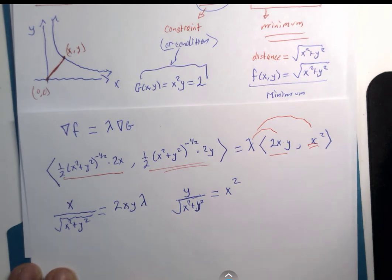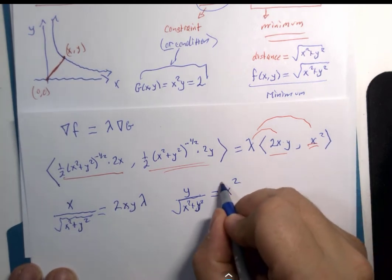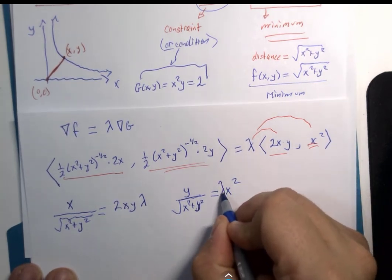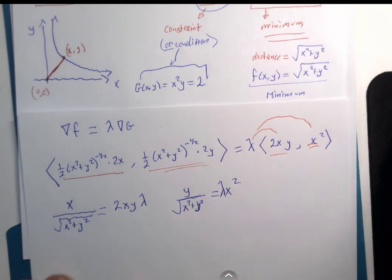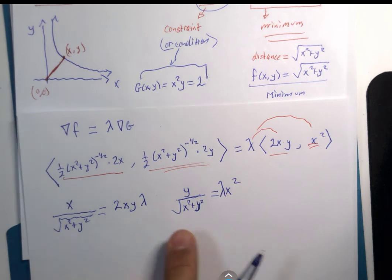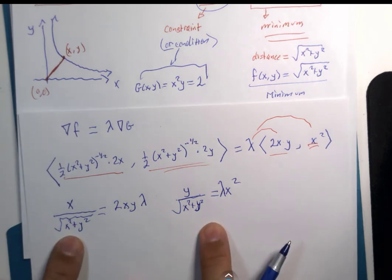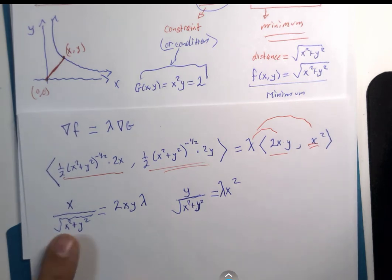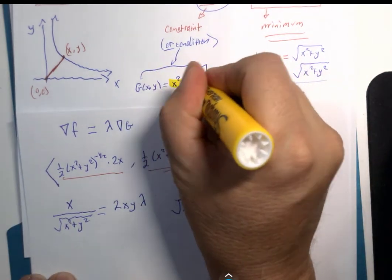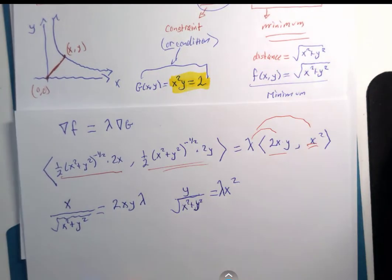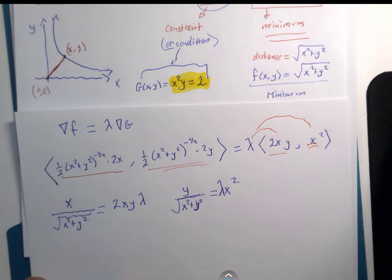Half of 2y is y divided by square root of x squared plus y squared. That's equal to lambda multiplied by x squared. And if you count the number of variables, I lost my lambda. There's my lambda. If I count my variables, I will see x, y, and lambda, but only two equations. And I remember, then, that my condition or constraint is my last equation to utilize.